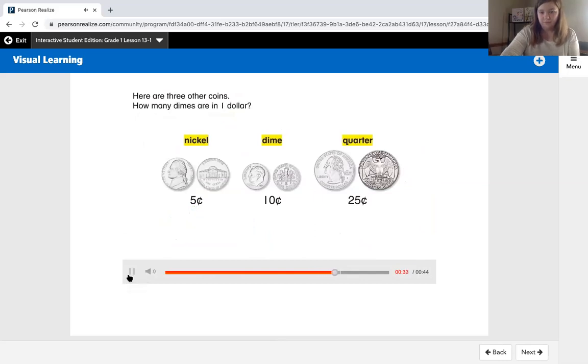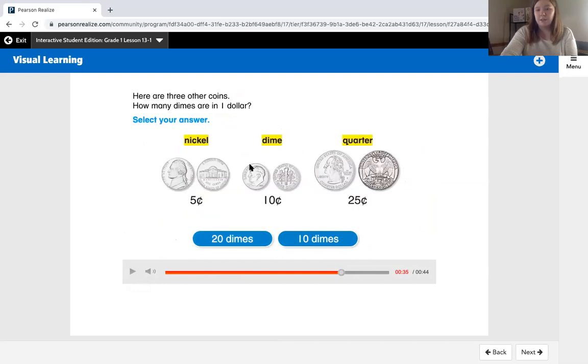How many dimes are in one dollar? Select your answer. We know that a dime is worth 10 cents. Remember this little symbol means cents. If we know that a dollar is worth 100 pennies and each dime has 10 pennies in it, how many dimes are in one dollar? Is it going to be 20 dimes or 10 dimes? I know a dime is worth 10 cents, so I'm going to count by tens to get to 100.